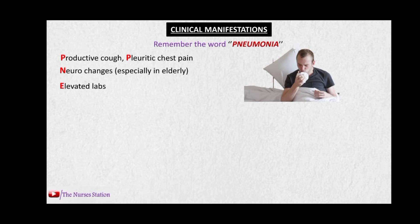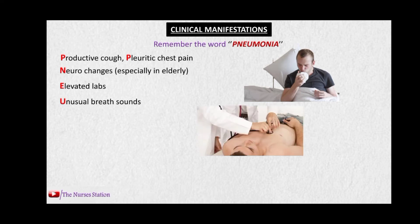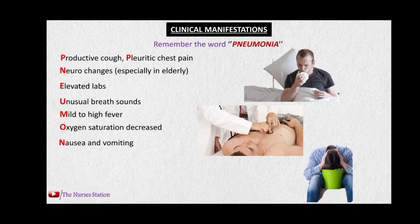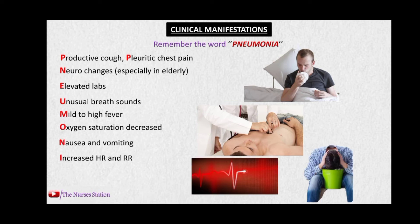There are elevated labs — the partial pressure of carbon dioxide goes beyond 45 mmHg, above normal, and the WBC count increases. Unusual breath sounds such as crackles are heard when auscultating the lung fields. There may be mild to high fever and oxygen saturation decreases due to impaired gas exchange.